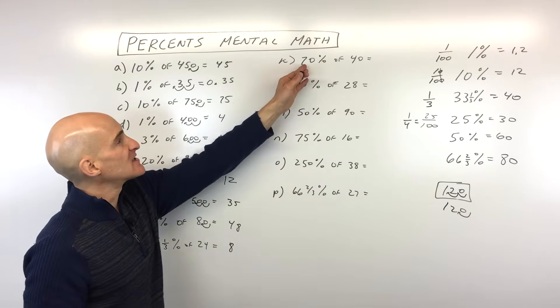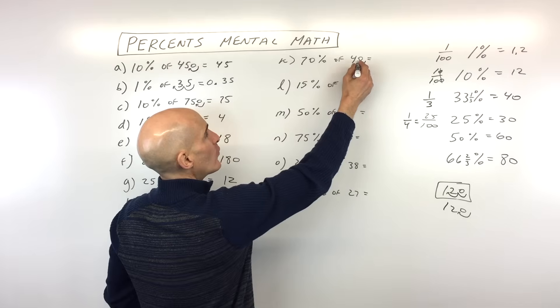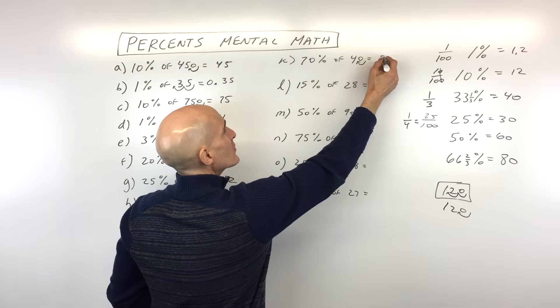Okay, let's look at letter K. 70% of 40. Let's find 10%. That's 4. 7 times 4 is 28.